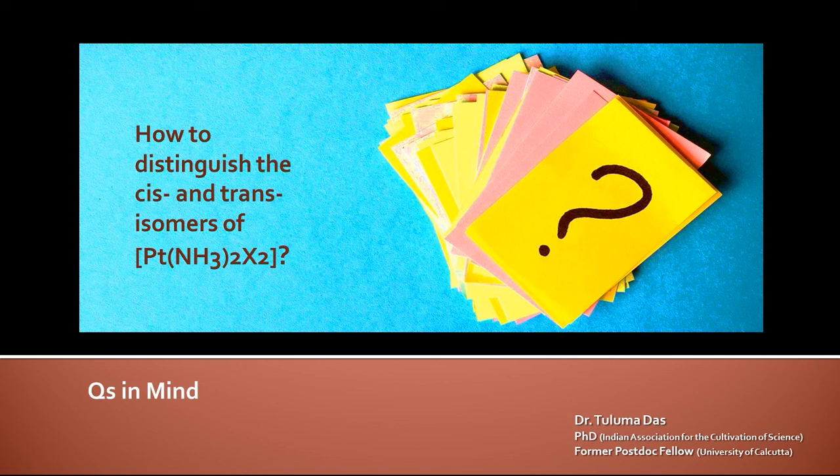How to distinguish the cis and trans isomers of Pt(NH3)2Cl2 — this is a square planar complex of platinum where we can have two geometrical isomers: one is cis and another one is trans. When talking about distinguishing them, it is always better if they have drastically different colors, but that is not the case. Their colors are close to each other, so just by looking at their physical appearance or color, it is really not possible to distinguish them.